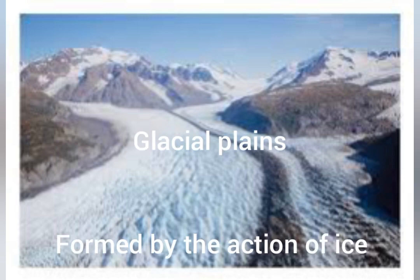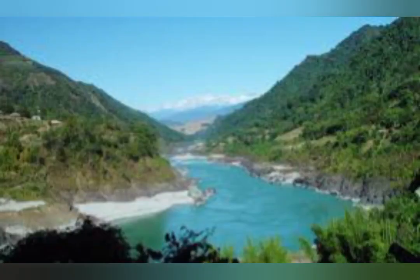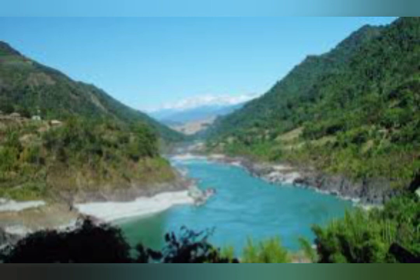Another type of Plains are the Glacial Plains, which are formed because of the action of ice. During the ice age, large sheets of ice covered huge parts of the earth, which then melted and formed plains. An example is the Imphal basin in the Manipur Hills, which is an ancient glacial lake that was initially glaciated and is now in the form of a lake.